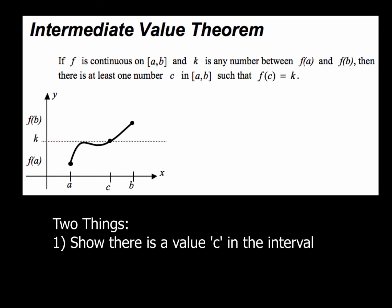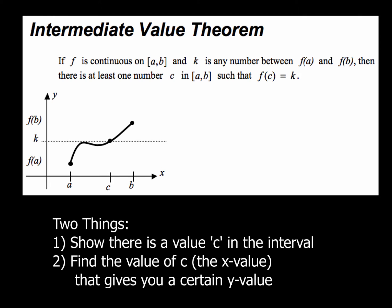Sometimes you'll be asked to just show that there's a c value in the interval, and the c value is the x-coordinate that gives you some y-coordinate k that's within the interval you're given. The other thing you might be asked to do is find what that x value is, find the value of c that gives you that certain y value. To make this more practical, we'll take a look at this example.